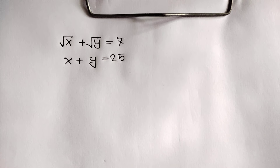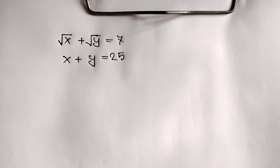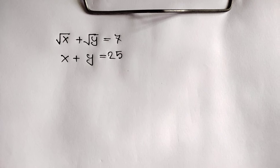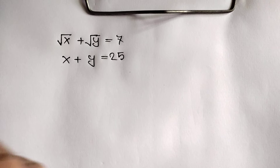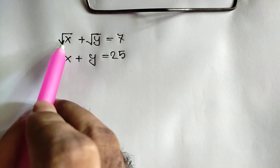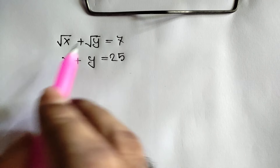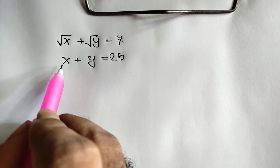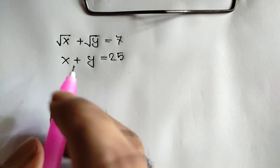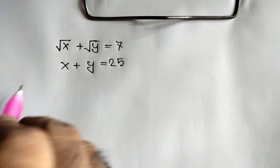Hi everyone. In this video I am going to show how to find the value of x and y, where square root of x plus square root of y is equal to 7, and x plus y is equal to 25.